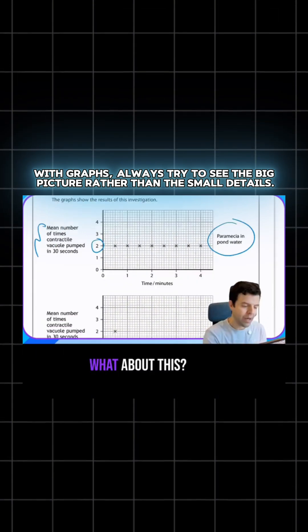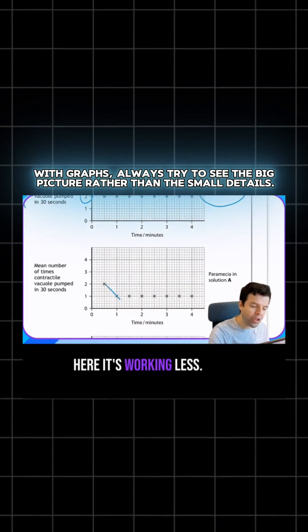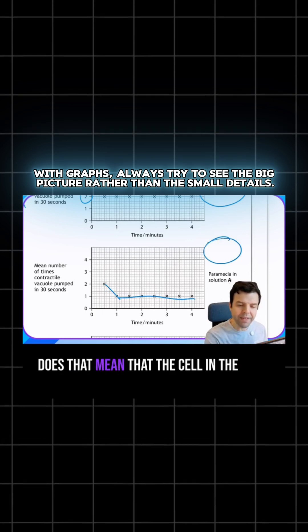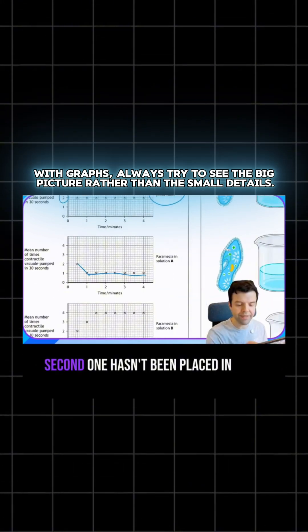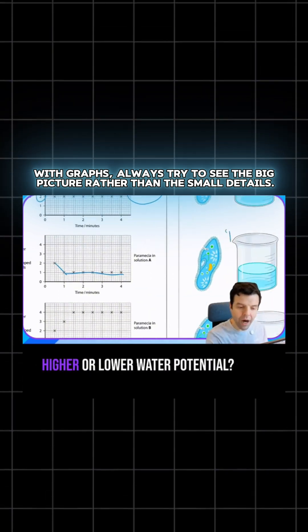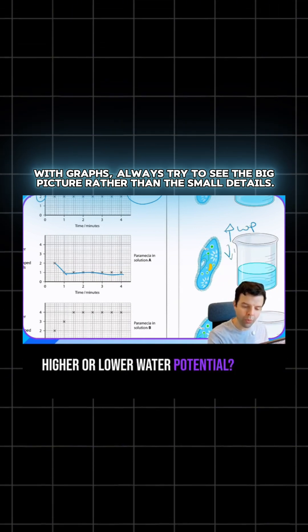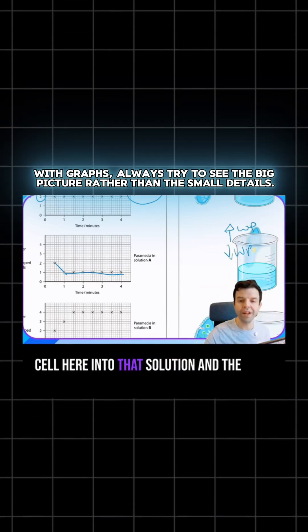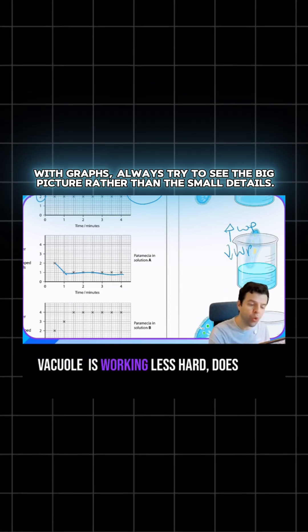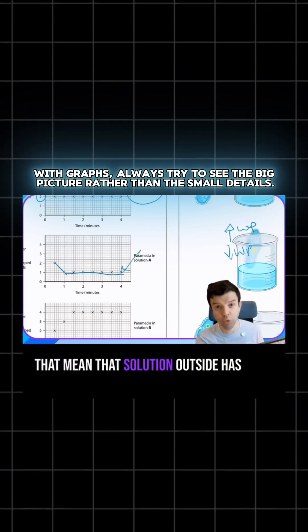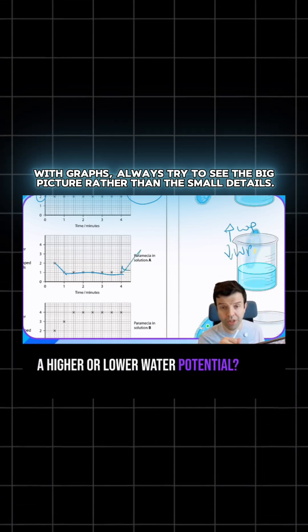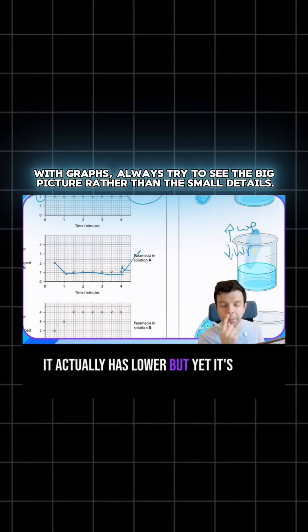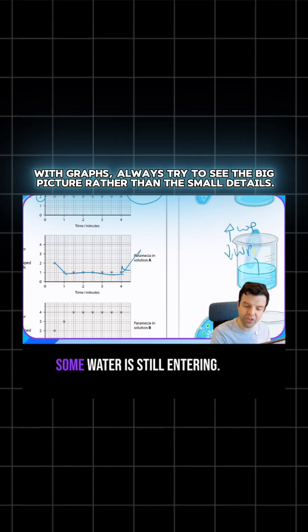What about this? It's working less. Think about it. If I'm placing that animal cell into that solution and the vacuole is working less hard, does that mean the solution outside has a higher or lower water potential? It actually has lower, but yet it's still higher than the cell because some water is still entering.